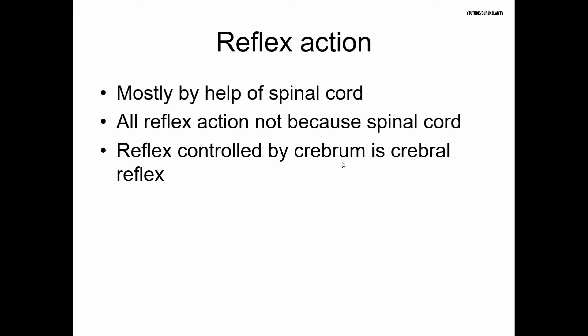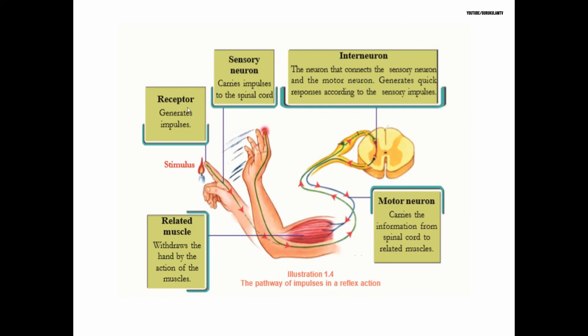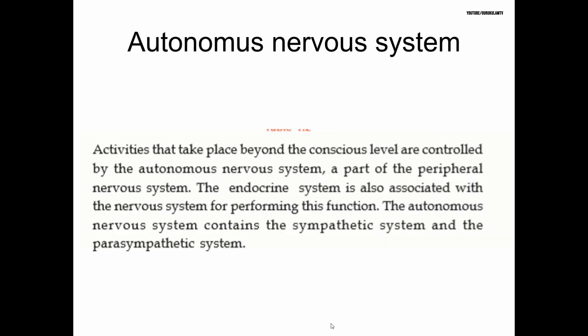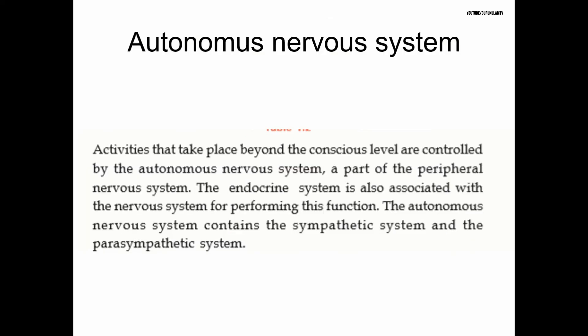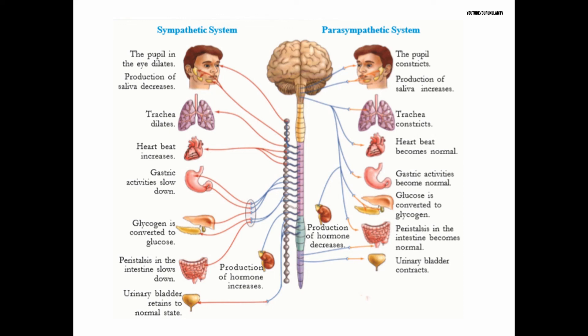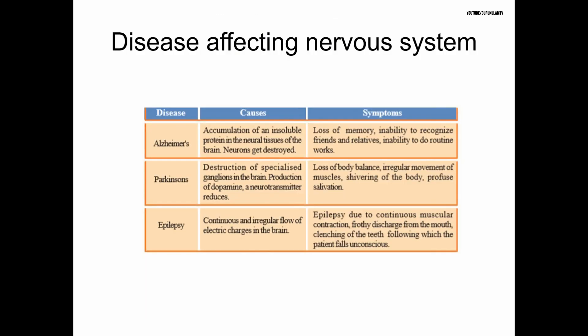The reflex arc involves the spinal cord. The pathway is: stimulus → sensory neuron → interneuron → motor neuron → muscle response. The autonomic nervous system is divided into the sympathetic and parasympathetic systems.